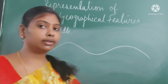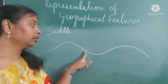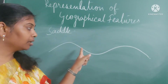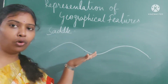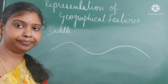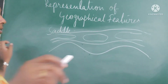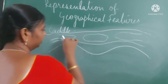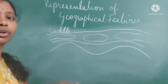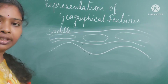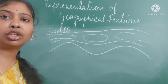The next one is a saddle. We all know the saddle of a horse. Here the depression becomes broader and low — that is known as a saddle. This is how the saddle is represented. Here you can see a broader contour because it is gentle. If it is steep we can see contours which are very near to each other.